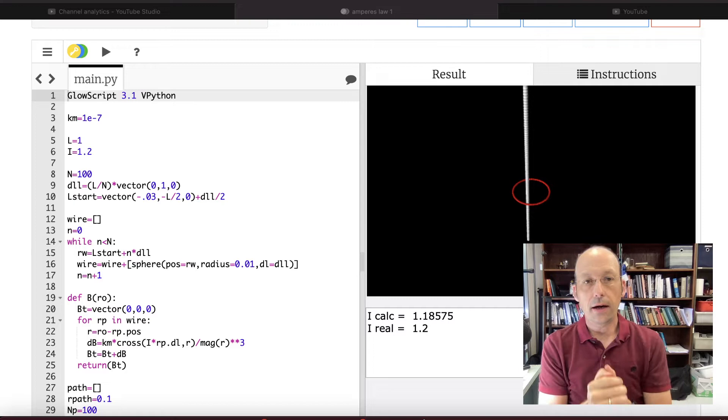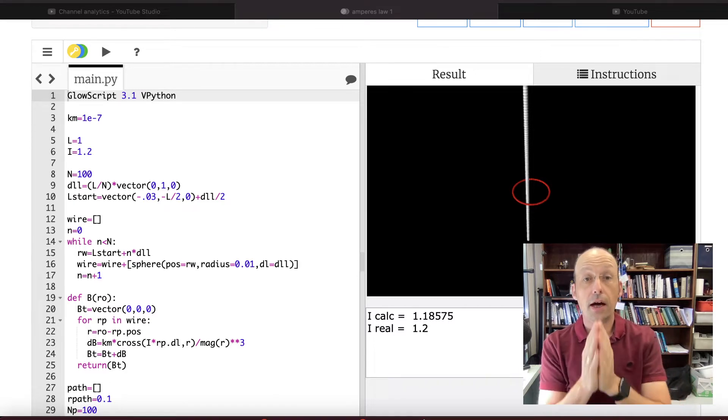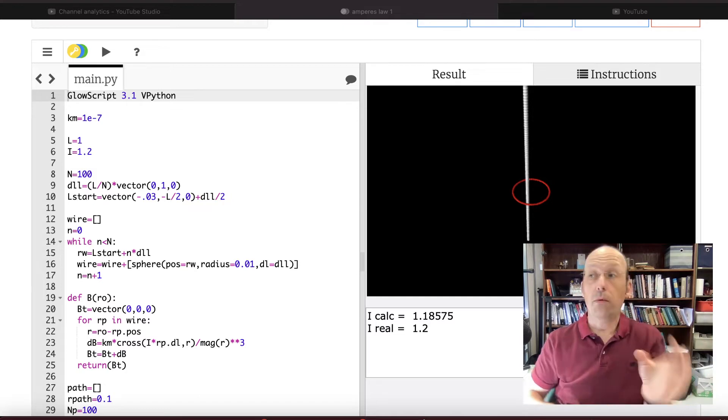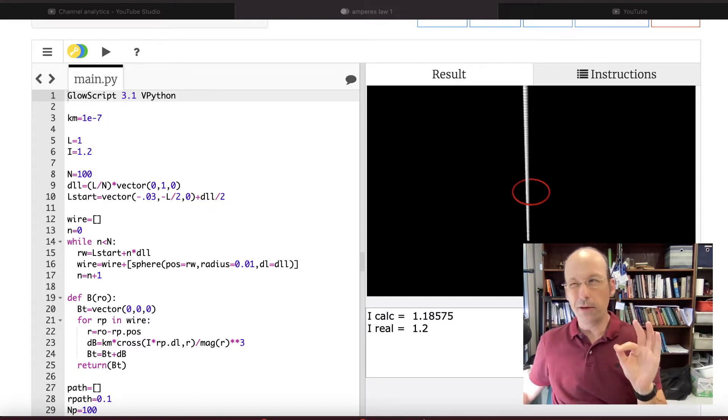So this is my program in which I calculated the path integral to show Ampere's Law works numerically. And I want to make a graph. I want to add on to this a graph and maybe do something else.